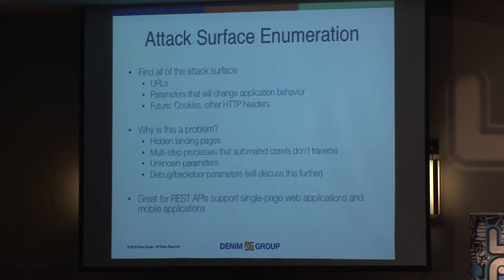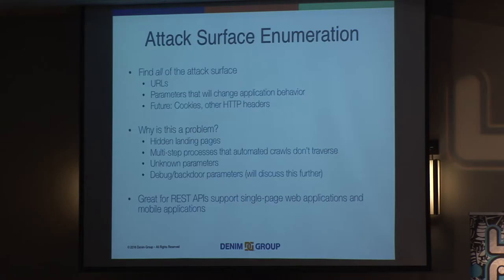Why is this a problem? A lot of times you've got a dynamic testing engine that has to guess at the application attack surface. There may be hidden landing pages that link back into the application but that you'd never navigate to from the homepage. You can also have multi-step processes where the scanner doesn't manage to get through the workflow, or unknown debug parameters. I once worked on a ColdFusion application where for any page, if you passed a parameter named 'd', it would delete the order with the ID of whatever that parameter value was.